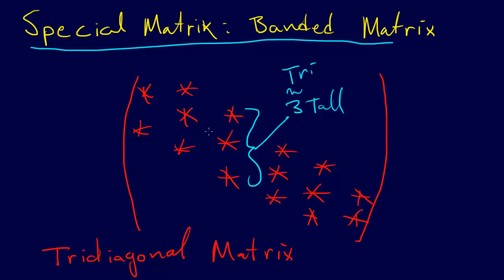This is a type of banded matrix. The band could be wider, it could be narrower, that's a banded matrix.